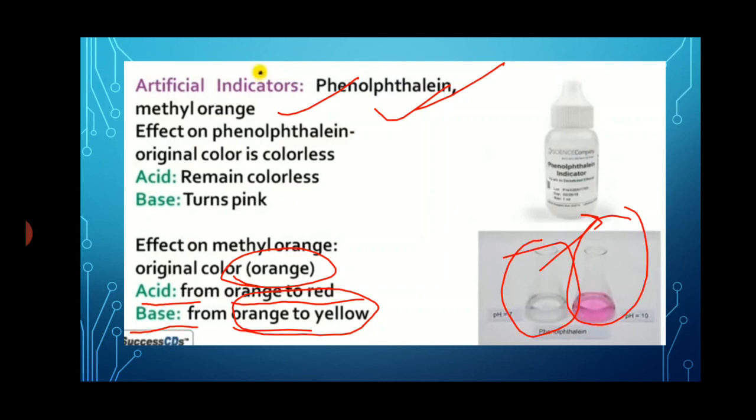Natural indicators change their color when they come in contact with any acid or base — like turmeric, red rose, red cabbage, and litmus. Olfactory indicators change their smell whenever they come in contact with any acid or base — like vanilla essence and onion, which immediately changes its smell when it comes in contact with any base.